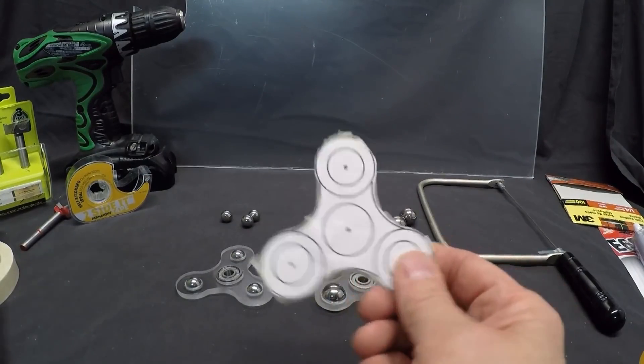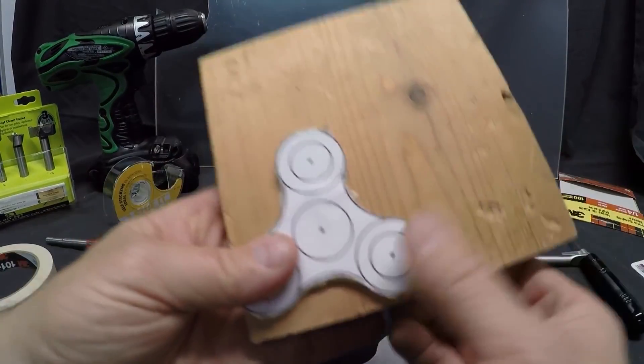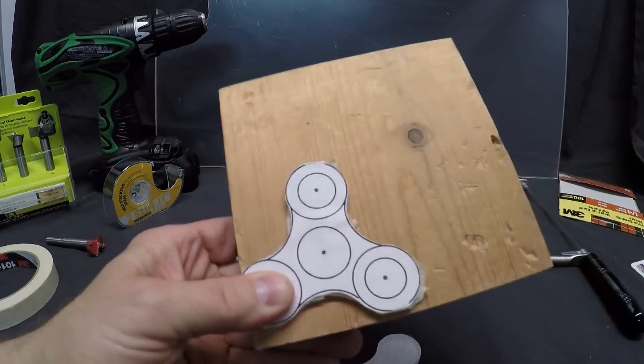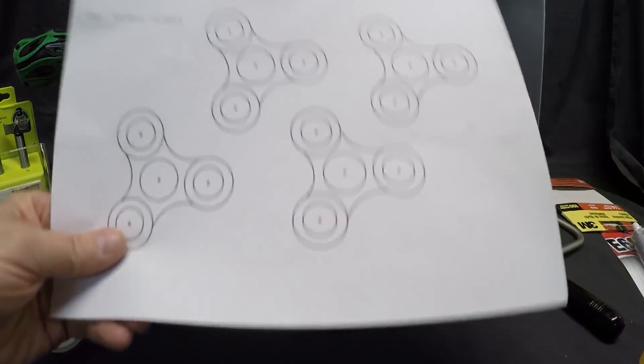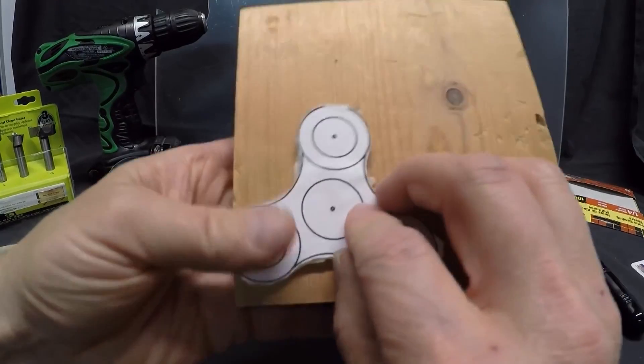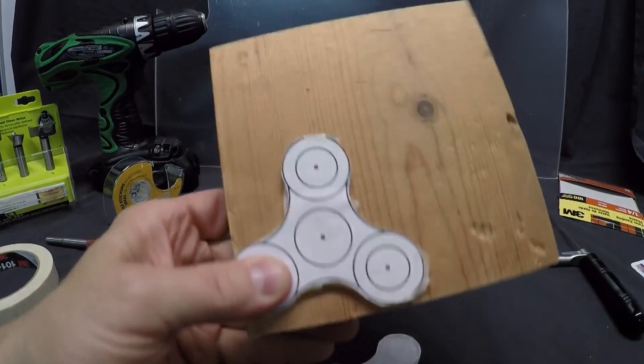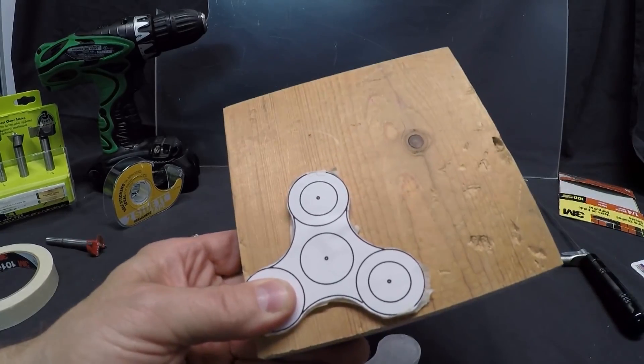When you have the shape, put on a table or any surface that you won't use anymore. This is really important because we are going to glue the design on the PET plastic and the table. Be sure that it is fixed because you have to make the holes with the drill bit.